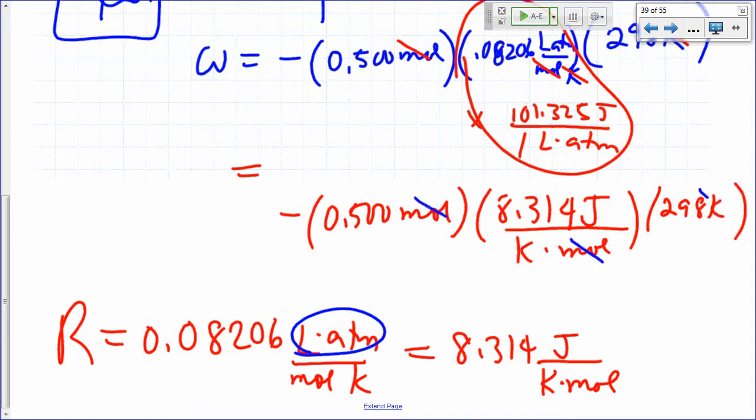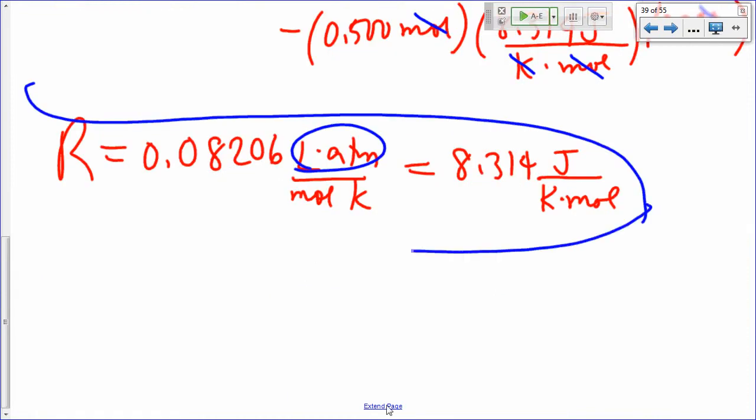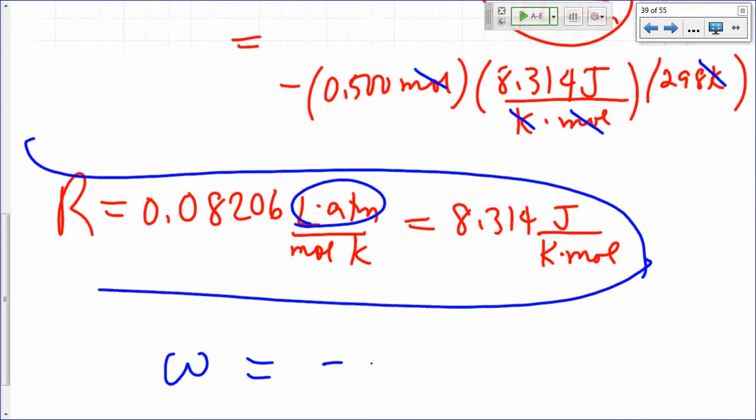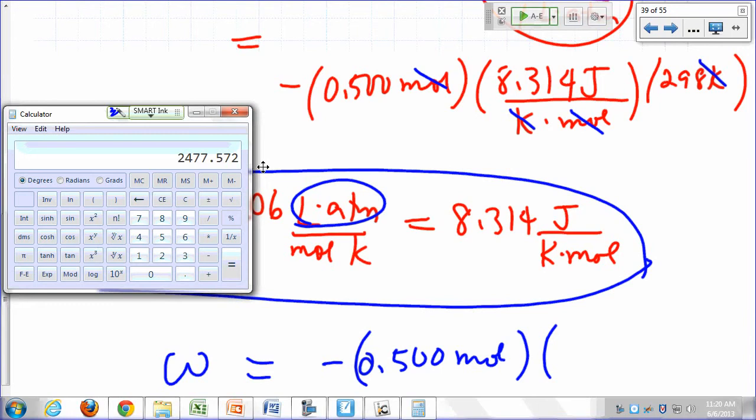So mole cancels out, Kelvin cancels out. What would that give you? So our work is equal to negative 0.50 moles times RT. That's 8.314 times 298. That's 2477 joules.